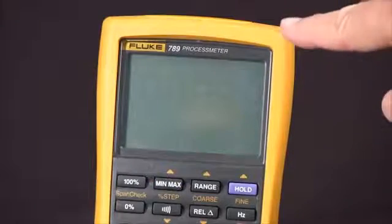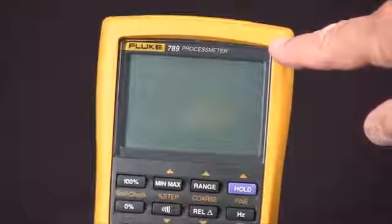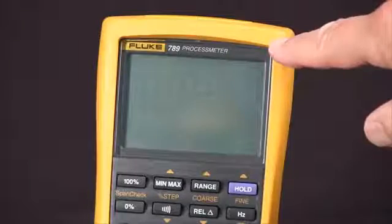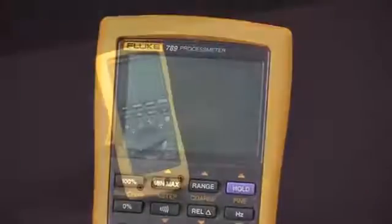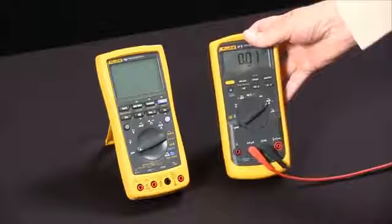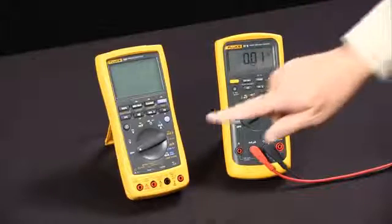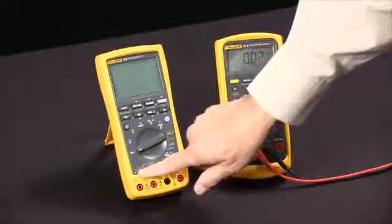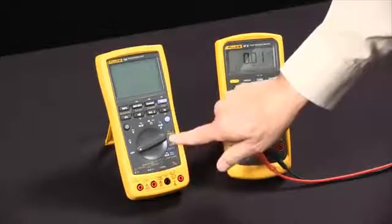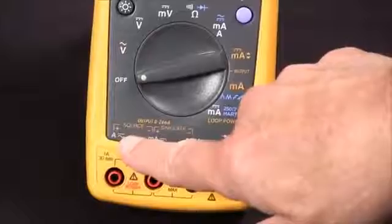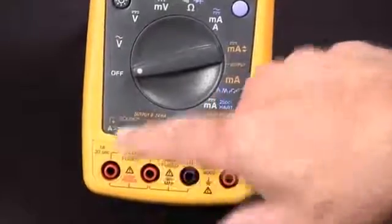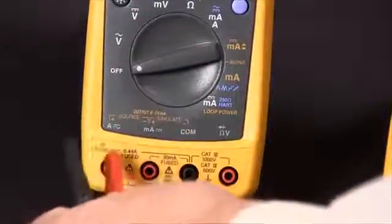To source 4 to 20 milliamps DC current with our Fluke 789 process meter, we're going to use a digital multimeter to measure the current that we're sourcing. You'll notice everything that has to do with sourcing is in orange. We're going to come over here to the source plus and minus output and attach our meter.